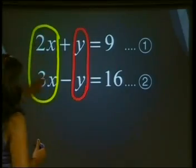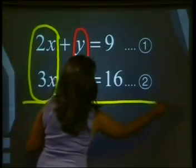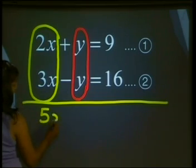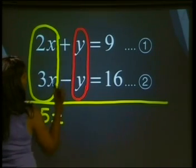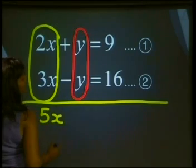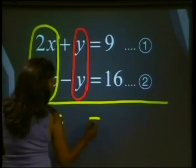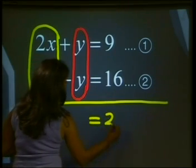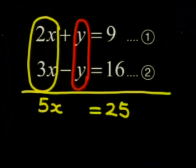If I add this column down this way, let me just put a line across here. 2x plus 3x gives me 5x. Positive y plus negative y gives me 0. Then I'm going to write is equal to 9 plus 16 gives me 25. We now have the equation 5x is equal to 25. We can solve for x. x is equal to 5.